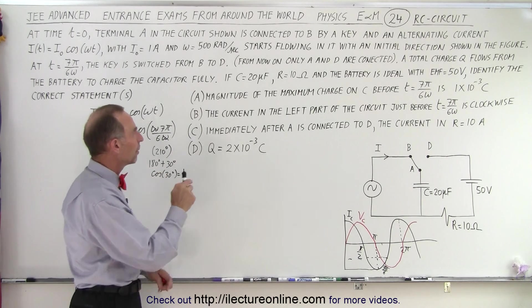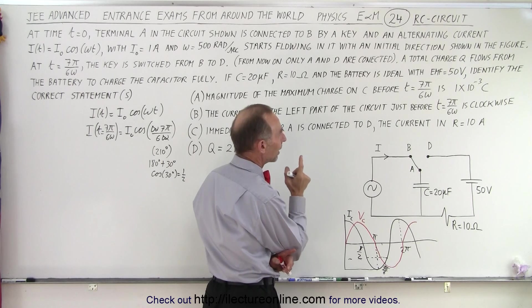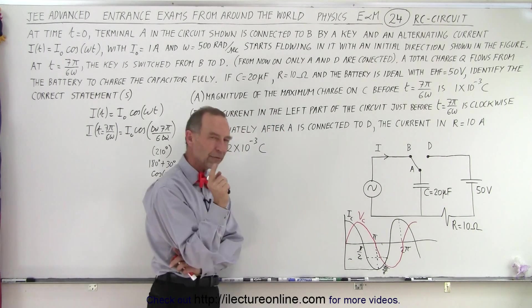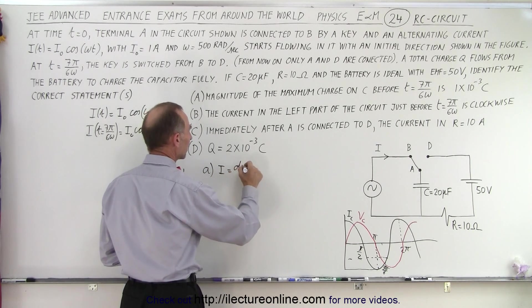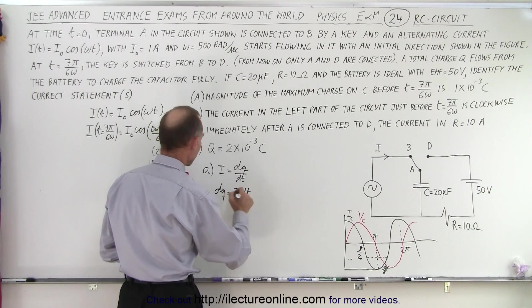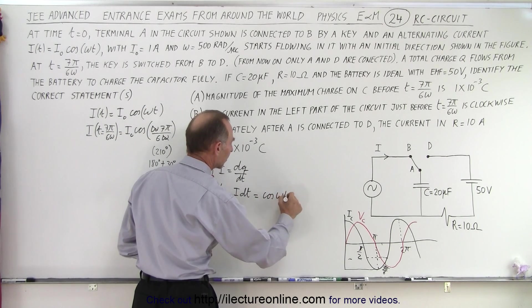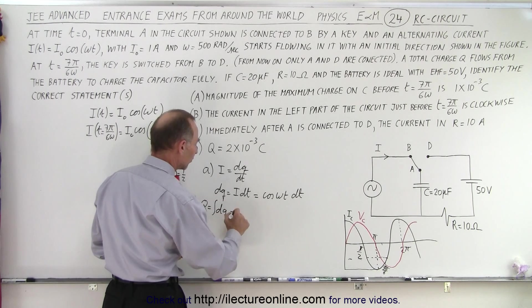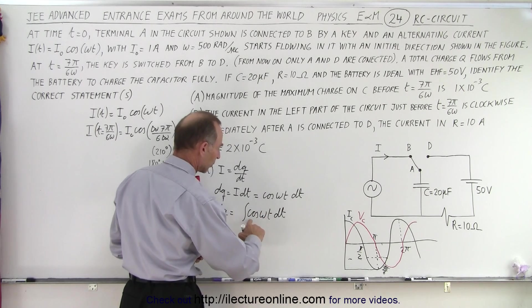Can we answer the questions? The magnitude of the maximum charge on C before T equals 7 pi over 6 omega is 1 times 10 to the minus 3. How do we figure that out? Well, let's go to this equation right here. So for part A, let's say that I is equal to dq dt, which means that dq is equal to I times dt, and I of course is 1 times the cosine of omega t. So this is equal to 1 times the cosine of omega t times dt.